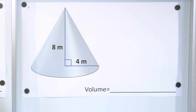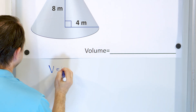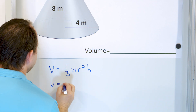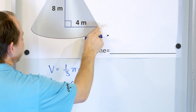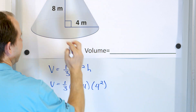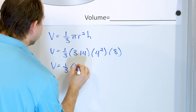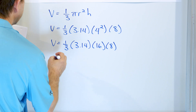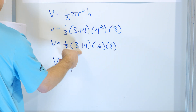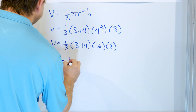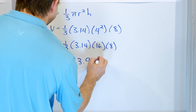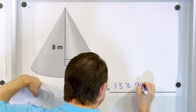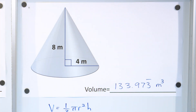Moving on to problem number 3 — the units are in meters, but it's the same process. The volume is one-third pi r squared times the height. We have one-third times 3.14, the radius is 4 so it's 4 squared, and the height is 8 meters. So 4 squared is 16, times 8, times 3.14, then divided by 3, gives 133.97̄3̄ repeating. Since everything was in meters, the answer is 133.97̄3̄ cubic meters.